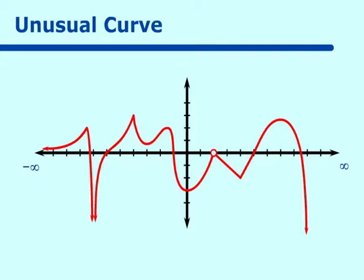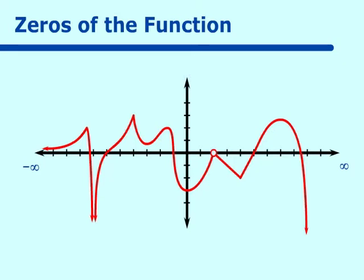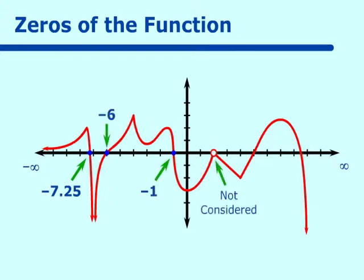Let's find out some of the attributes. What are the zeros of this function? The roots or zeros are when the function crosses the x-axis, and they are at negative 7.25, negative 6, negative 1 — though that's a hole so we don't consider it — 5, and again at 8.5.